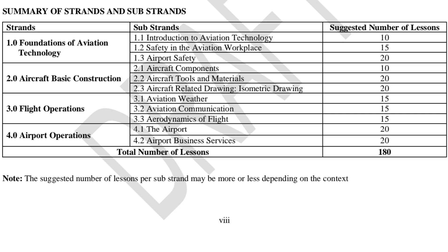The third strand is flight operations, where learners study aviation weather, aviation communication, and aerodynamics of flight. The fourth strand is airport operations, covering airport and airport business services. Aviation technology will be covered in 180 lessons per academic year.